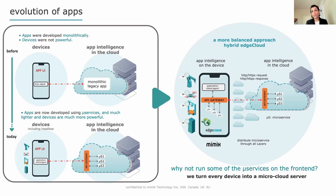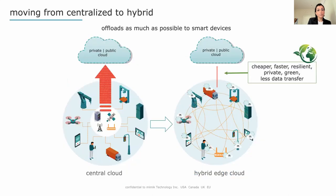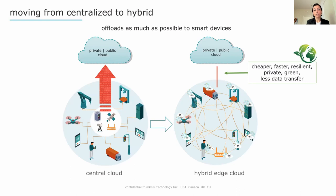By doing this, you're leveraging the power of all available hardware and doing some processing right at the data source where the application resides. We're essentially turning every device into a micro cloud server, moving from a centralized world to a hybrid model. Instead of everything communicating through a central node, every device now has cloud capability at the application level. They can form ad hoc clusters of a service mesh at the application level based on policy, communicate in a peer-to-peer fashion, and cluster based on account, network, or proximity — while still going through the cloud when it makes sense, such as for running global functions.